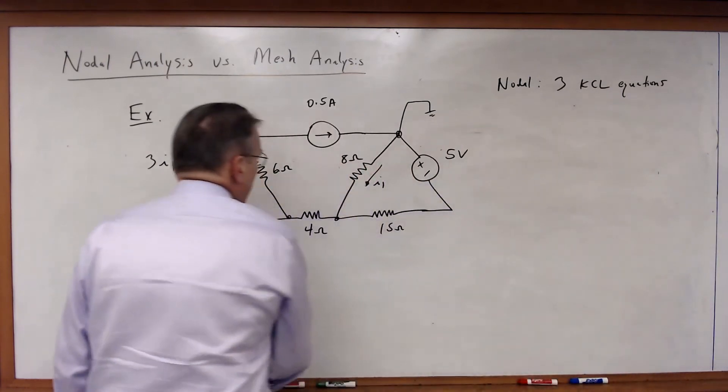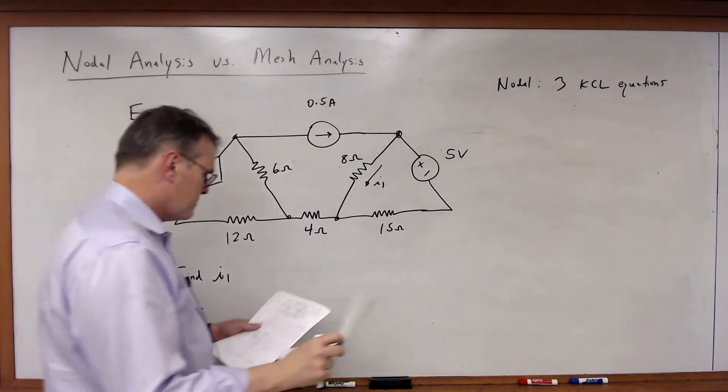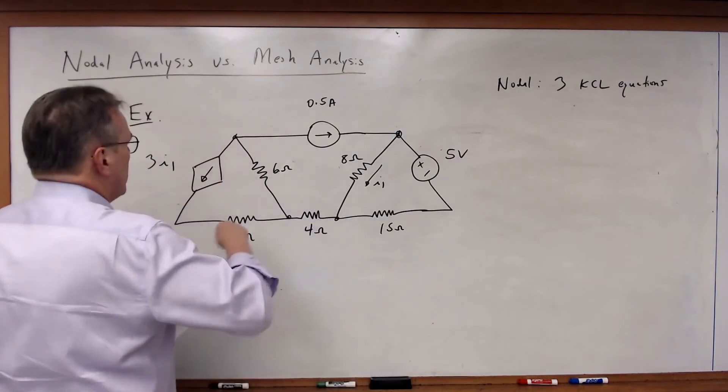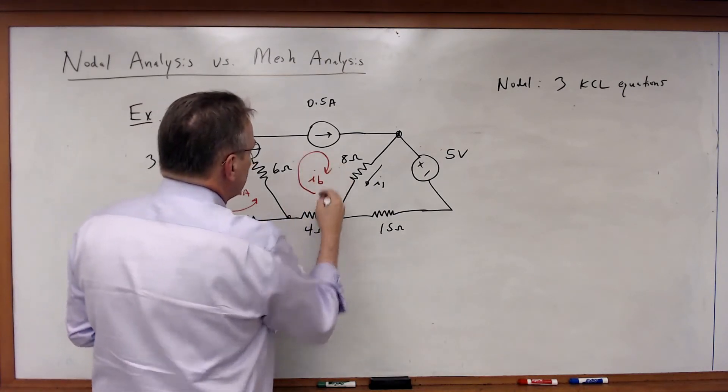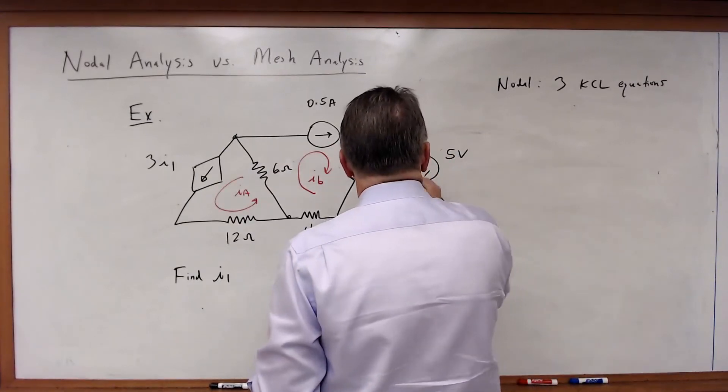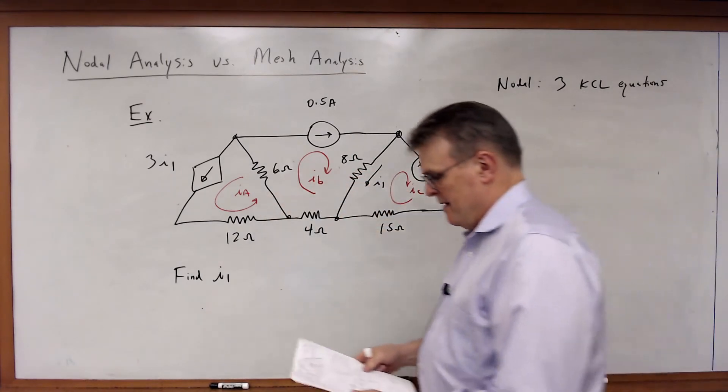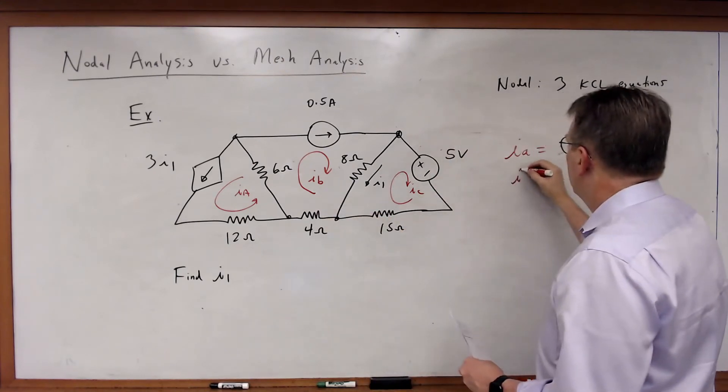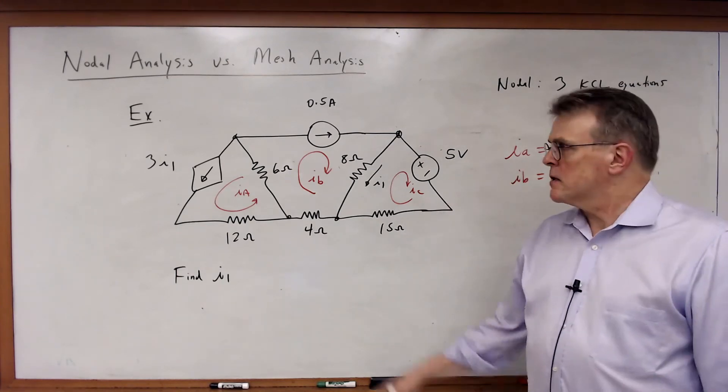What about mesh? Ah, mesh is different. Notice I've got two current sources here. And so in this case, what I've got is I'm going to call this one IA. I'm going to go along with that dependent current source. I'm going to call this one IB, once again, in the same direction as that current source. And here I'm going to call this one IC. And what do I note? IA and IB are defined. IA is equal to 3I1. IB is equal to 0.5 amps.